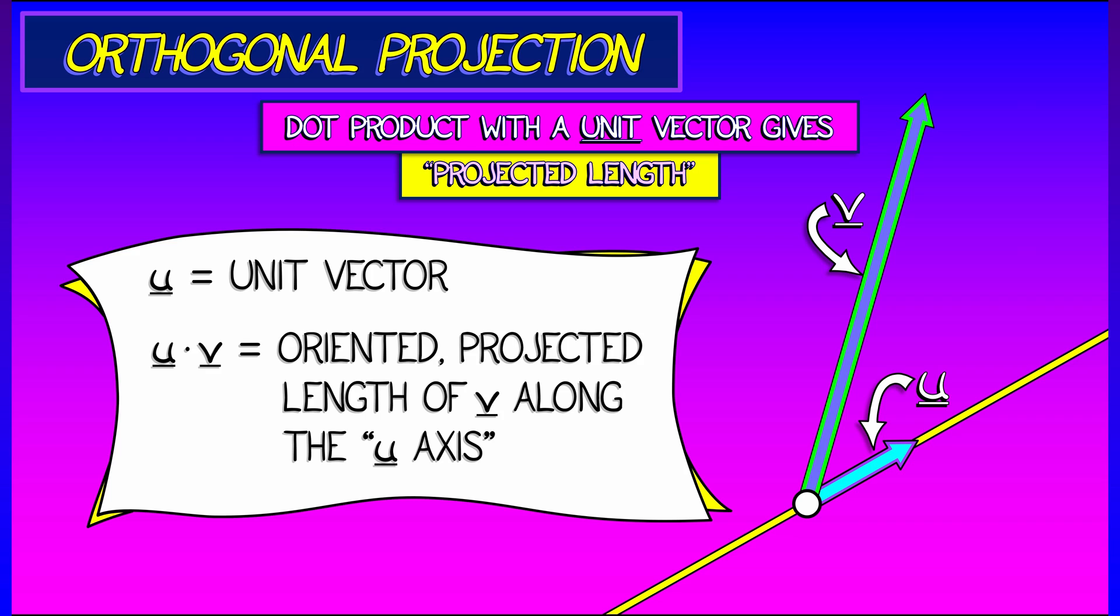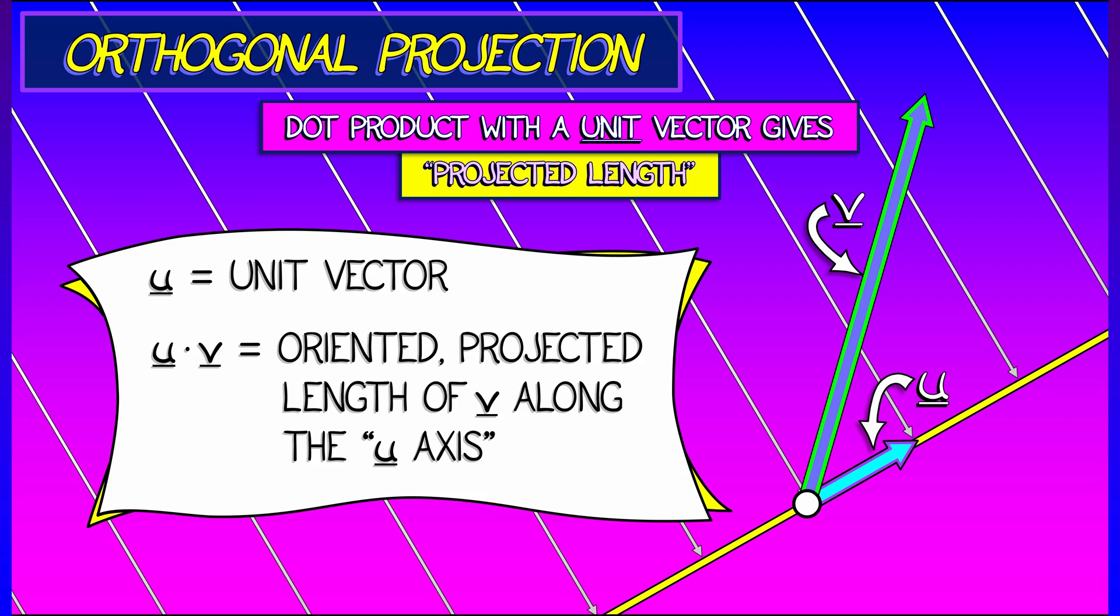Well, what do I mean the u axis? Well, draw a straight line through the u vector and think of that as a scale along which we're going to measure components.